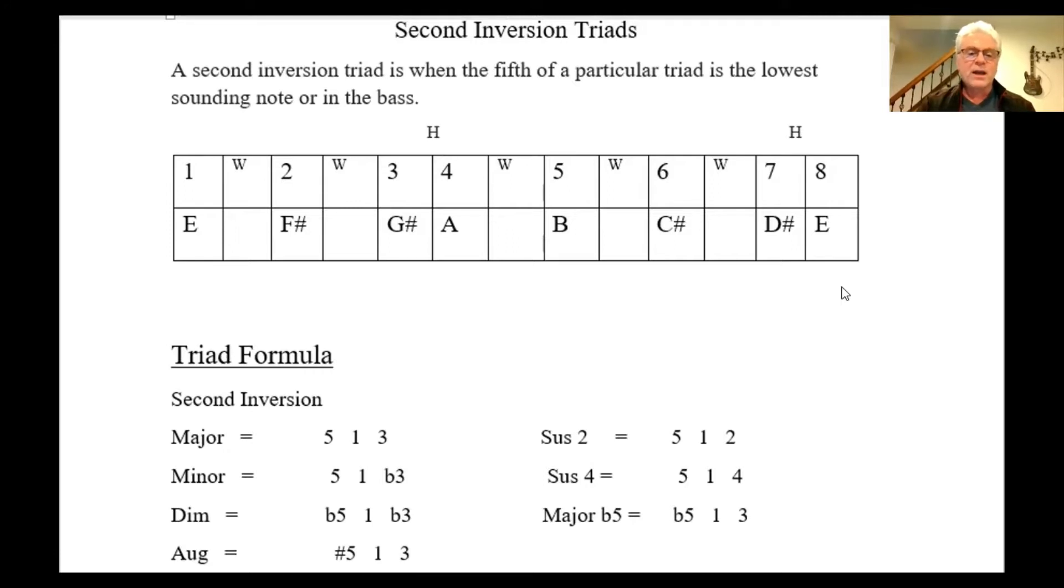In our triad formula, let's review what an E major triad is. In root position, it would be E the first note, the third note which is G sharp, and the fifth note which is B. In our previous video, we did first inversion triads.